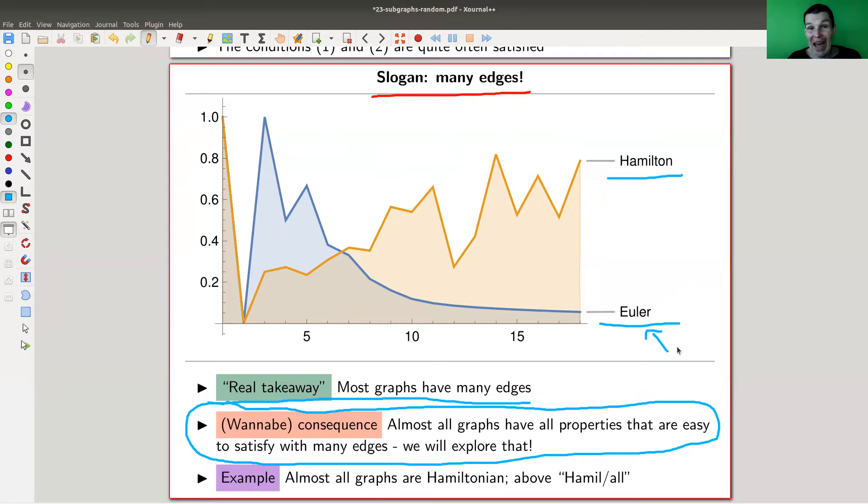So what I just did naively here is the following: there are two conditions the graph could satisfy, and they're kind of doing the opposite. One of them is really easily satisfied if you have lots of edges, the Hamiltonian property, and one of them is really difficult to be satisfied with a lot of edges, the Eulerian property. Eulerian is asking for a trail in your graph such that every edge is visited exactly once, and that's really difficult to satisfy if you have many edges.